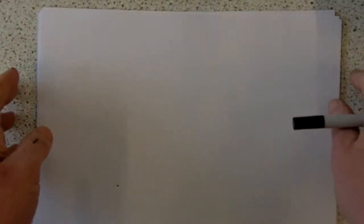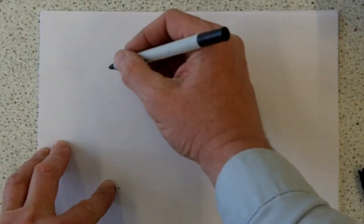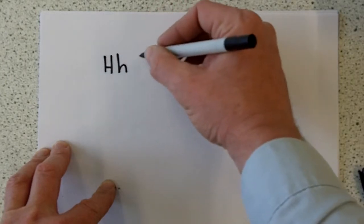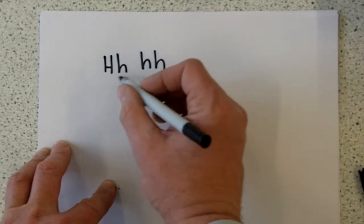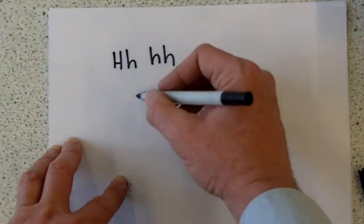This is the fifth video on Unit B1 for OCR 21st Century Science Revision, and in the last clip I set you the problem of what's the likelihood of offspring inheriting Huntington's disorder if we had the following genotypes. So let's try the Punnett Square Diagrams.